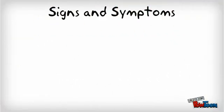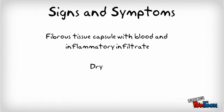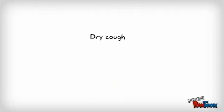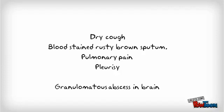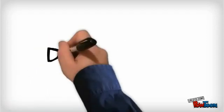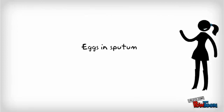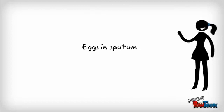Signs and symptoms: The fluke provokes development of a fibrous tissue capsule with bloody, purulent material containing eggs. There is inflammatory infiltrate around the capsule. Symptoms include a dry cough followed by production of blood-stained rusty brown sputum, pulmonary pain, and clubbing may develop. Worms may migrate to the brain, where they lay eggs and cause a granulomatous abscess resulting in symptoms similar to epilepsy. Diagnosis is based on the patient's history and symptoms; eggs are found in rust-colored sputum, often being examined for tuberculosis.